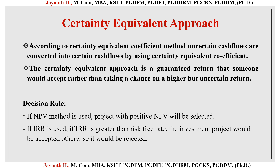There is something called a Guaranteed Return, because this will take a better chance of a good return instead of an uncertain return. By using Coefficient Values, we have converted the uncertain into certainty. So here we can at least look for a guaranteed return in the projects whichever we are evaluating. When coming to the decision rule, whenever we go for two different kinds of projects, whichever project is positive or more than one, that would be considered for selection of a particular project. This is what the theory of Certainty Equivalent Approach in brief says.